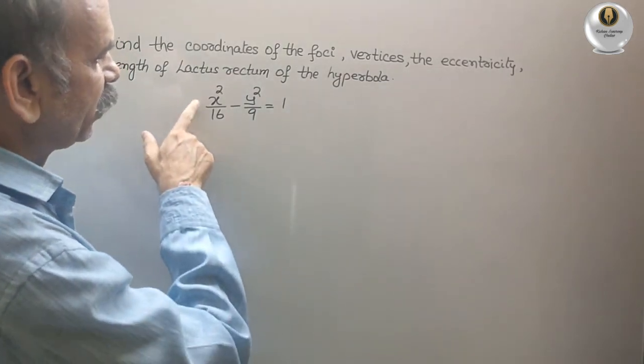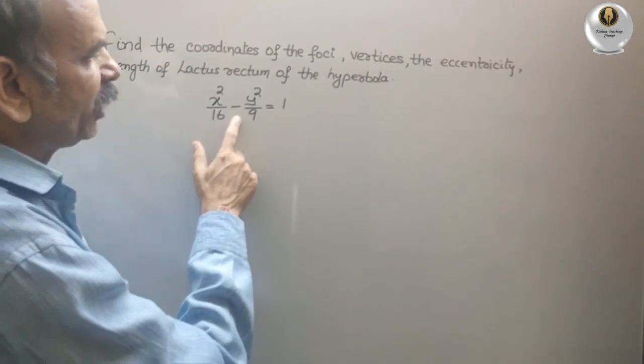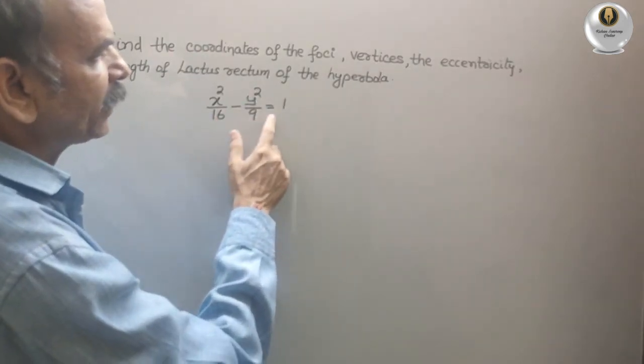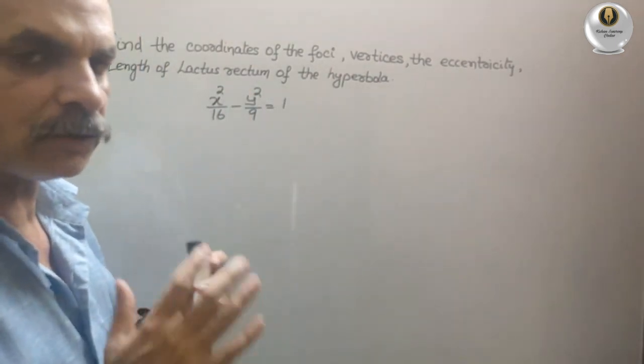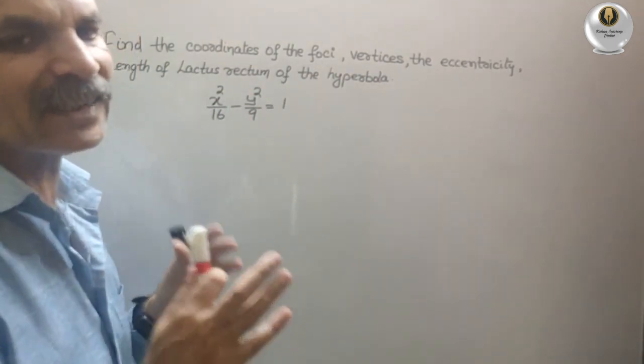So they have given the equation x square by 16 minus y square by 9 that is equal to 1. So first what we have to do, just we have to write the standard form.